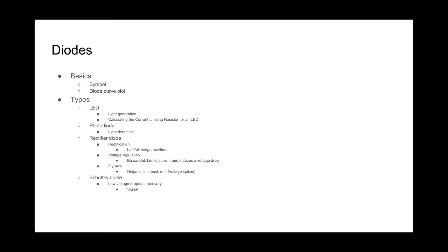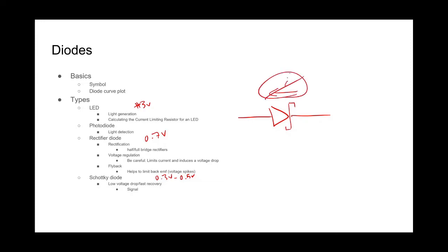Let's talk about Schottky diodes. Schottky diodes are primarily used for signal applications. They have what's called a fast recovery. The symbol for a Schottky diode is like a standard diode but with little curvy lines on the cathode end. They have a lower voltage drop — while rectifier diodes have around a 0.7 volt drop and LEDs have 3+ volts, Schottky diodes are around 0.3 to 0.5 volts. That's often why they're used for signals — to prevent backflow from corrupting a signal. Because they recover quickly, they help preserve the signal integrity.